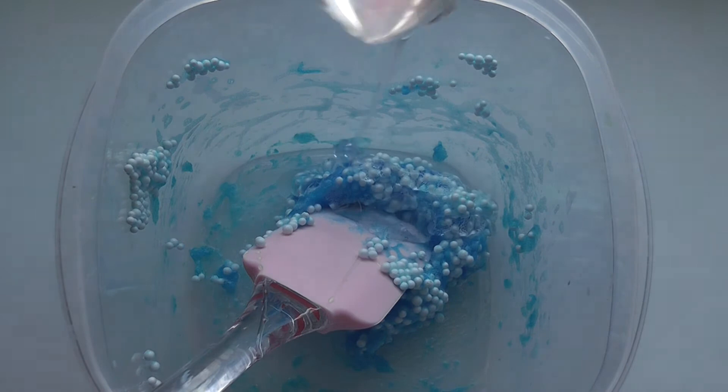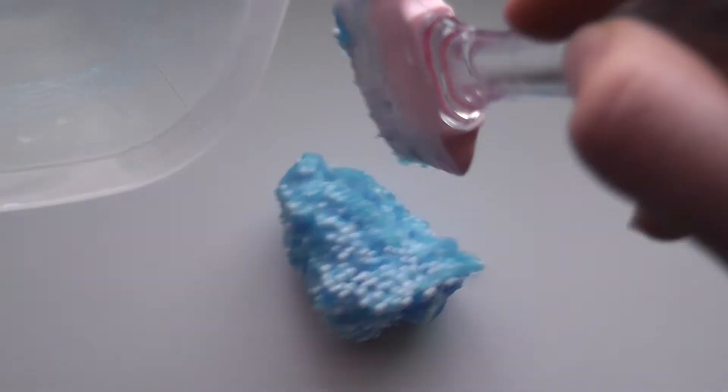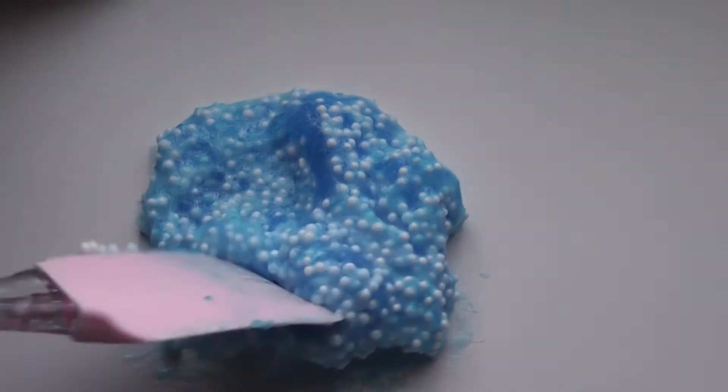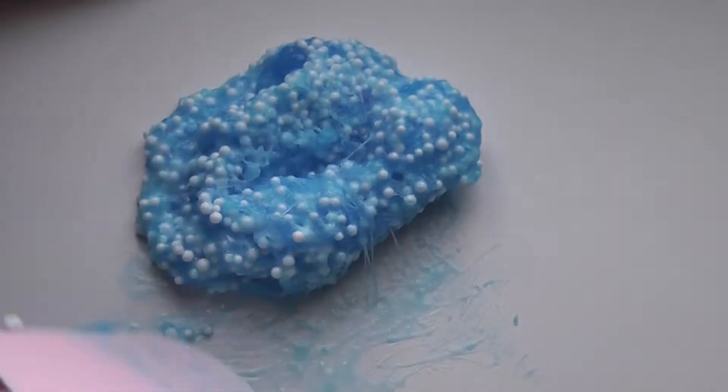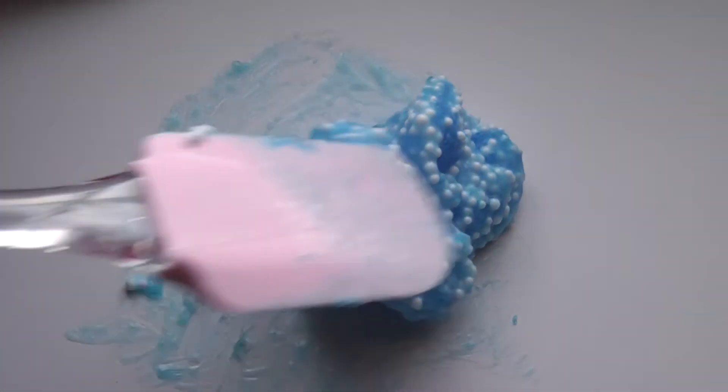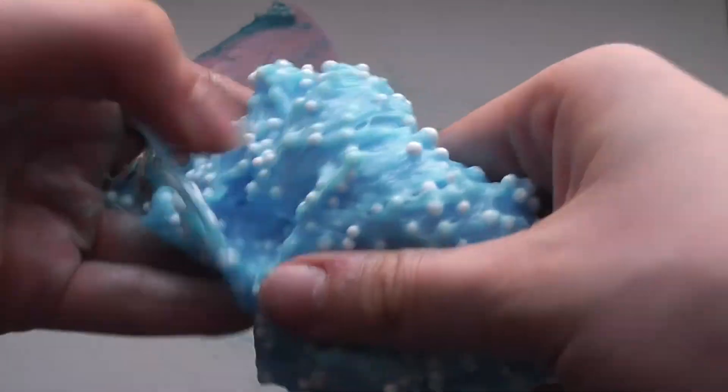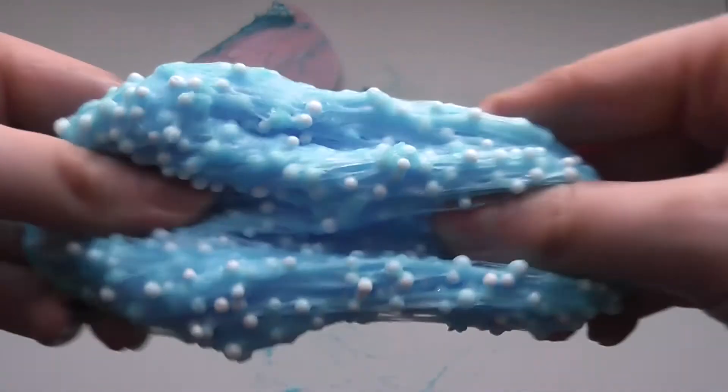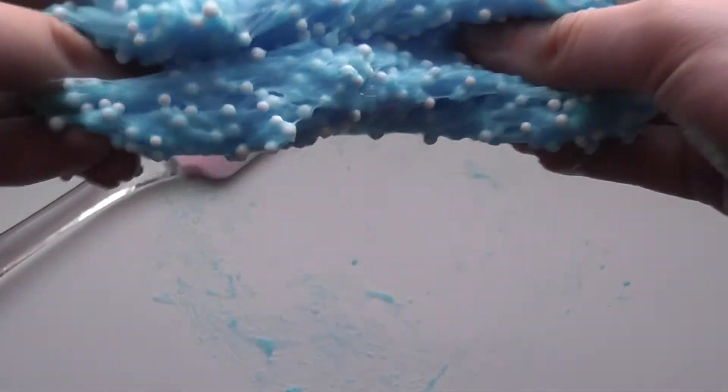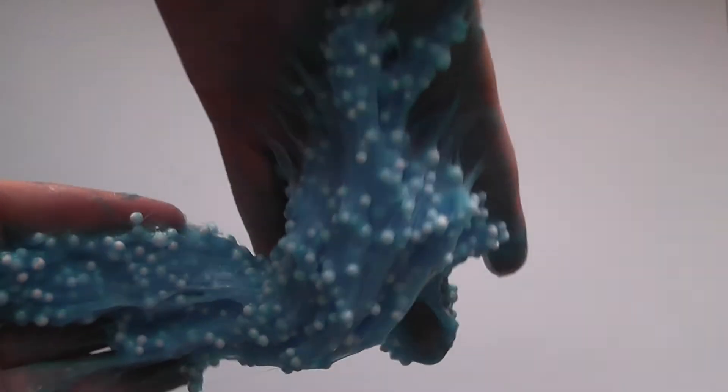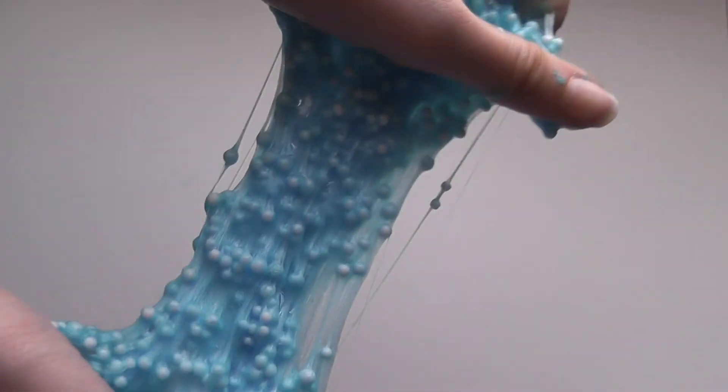I actually added in too much activator, so I don't know if you would consider this cheating, but I did have to add in more clear glue. Then I just took it out on my table and started kneading it. It was a little bit sticky, so I was showing you how sticky it was. At this point, I did have to add in more activator.